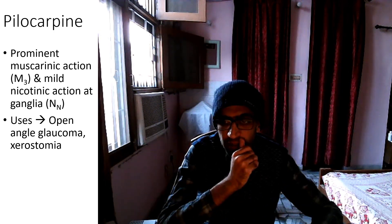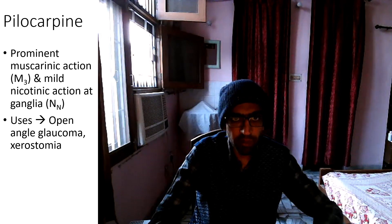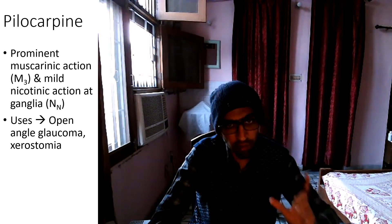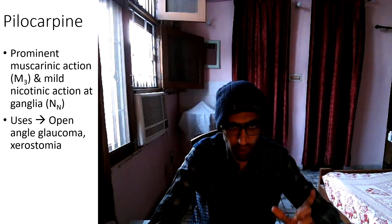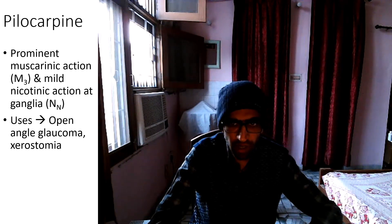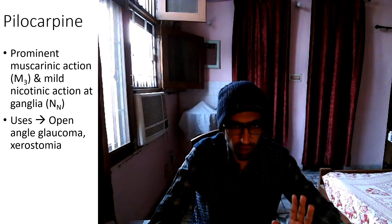Pilocarpine is obtained from the leaves of Pilocarpus microphyllus. Its main and prominent action is muscarinic. Its nicotinic action is very low — acting on ganglia and NM receptors.